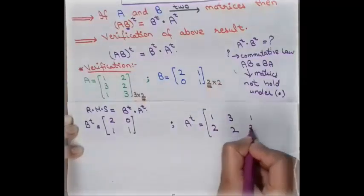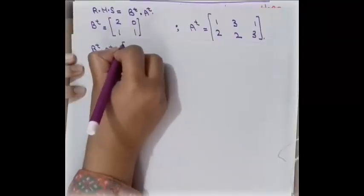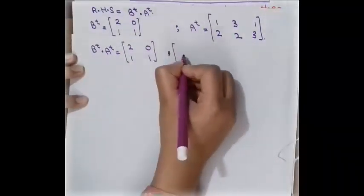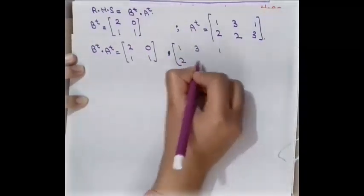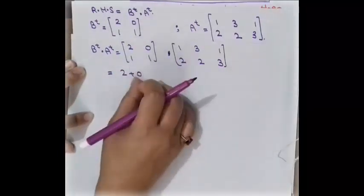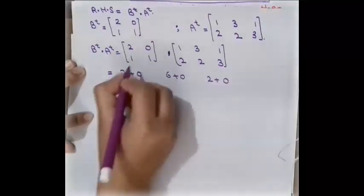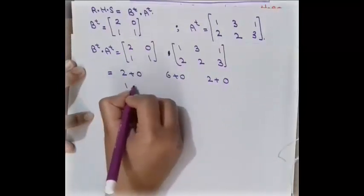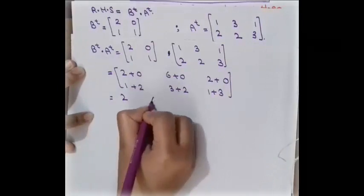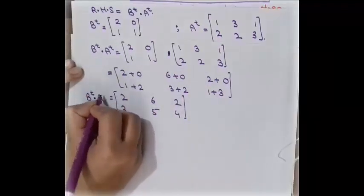Now we find the product Bᵀ × Aᵀ. Writing out the matrices we just obtained and multiplying: first row of Bᵀ times first column of Aᵀ gives 2+2=4, then 2+0=2. Fix the row and move to second column: 6+0=6 and 2+0=2. Moving to the next row: 1+2=3, 3+2=5, and 1+3=4. So BᵀAᵀ = [[2,6,2],[3,5,4]], which is the right-hand side.